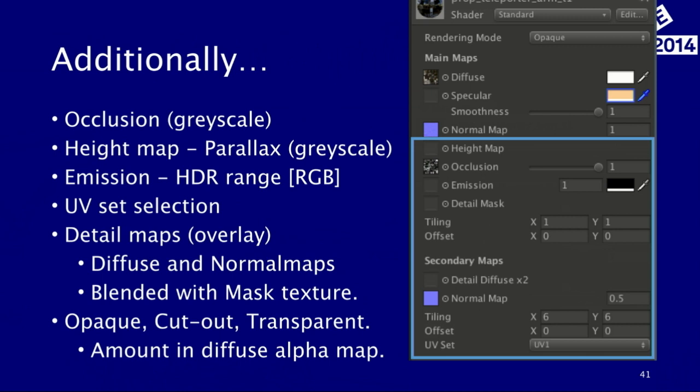You have the detail maps — basically an overlay like in Photoshop — it applies to diffuse and normal maps and is blended by a mask texture, which can usually be quite low-res. We also have different rendering modes, giving you the opportunity to have a cutout shader or an alpha-blended transparent shader for glass and such. Cutout shaders are naturally used for trees or leaves. The alpha amount is just stored in the diffuse alpha map.